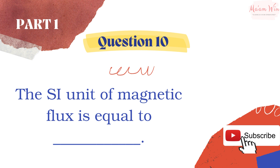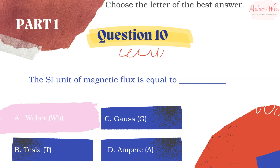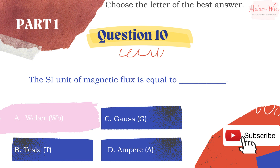The SI unit of magnetic flux is equal to blank. Choose the letter of the best answer. The right answer is letter A. The SI unit of magnetic flux is the weber, named after German physicist and co-inventor of the telegraph, Wilhelm Weber. The unit has the symbol Wb.